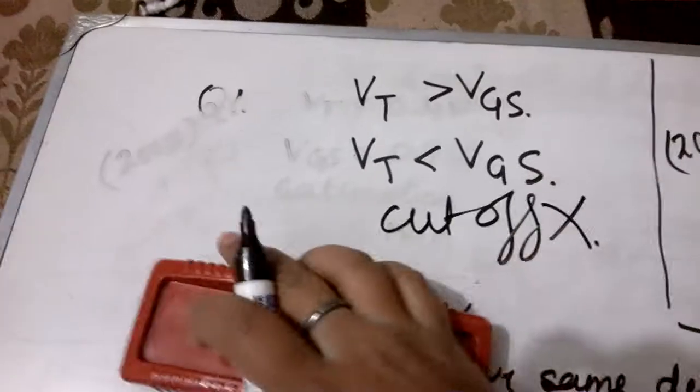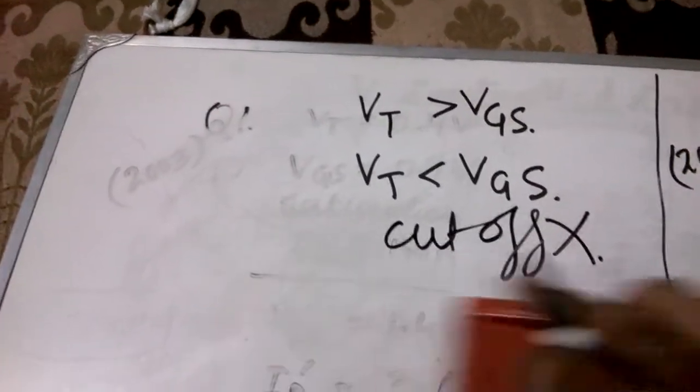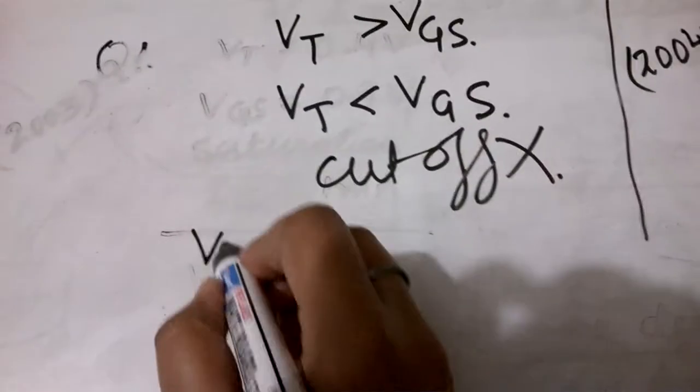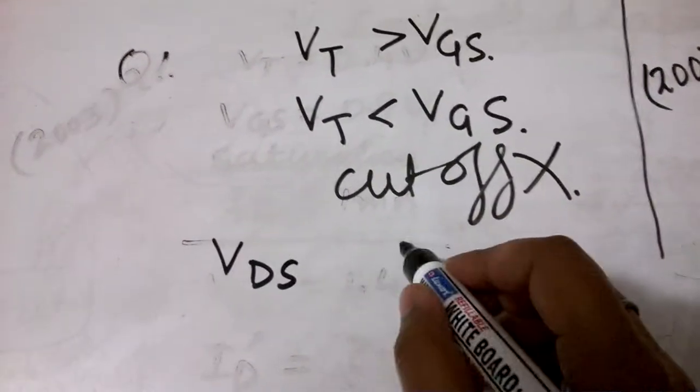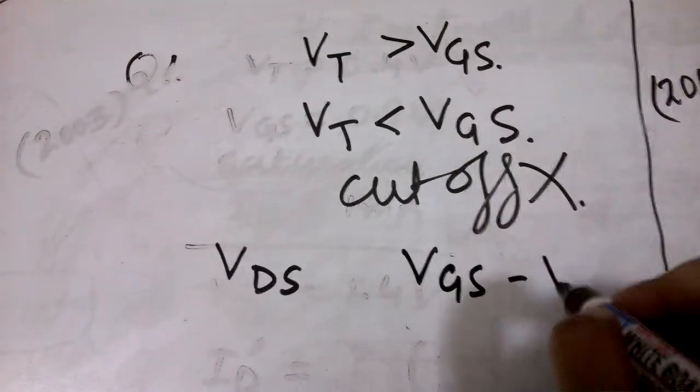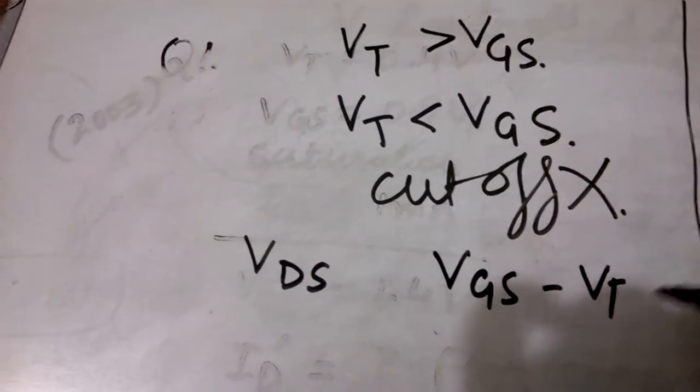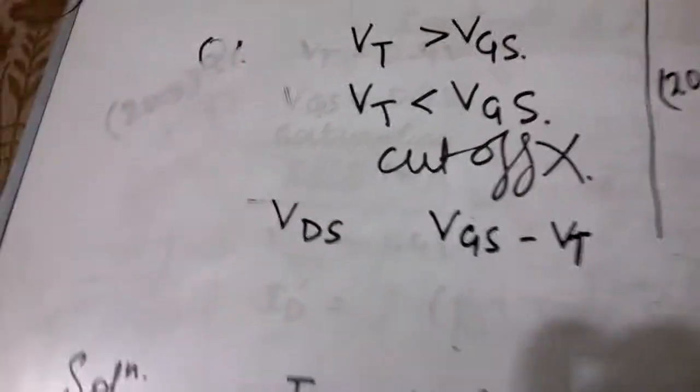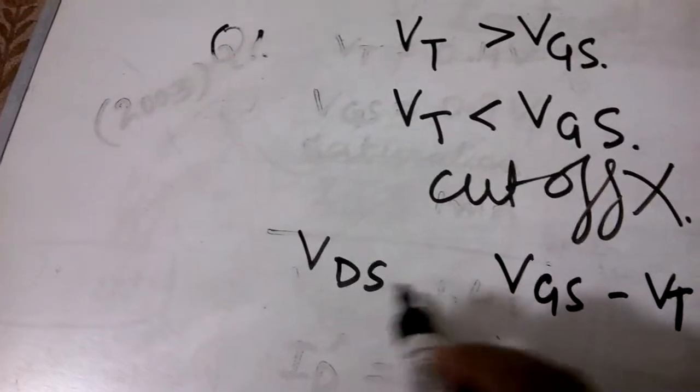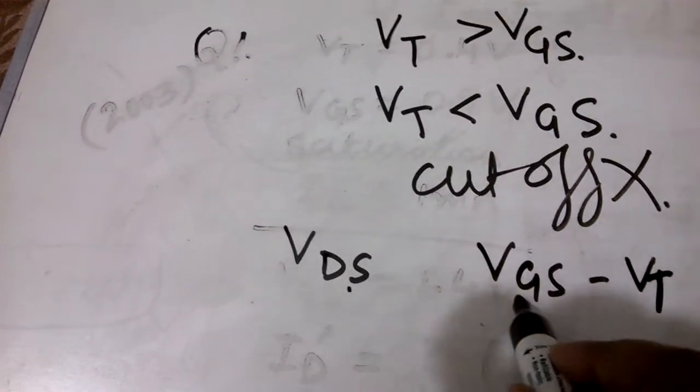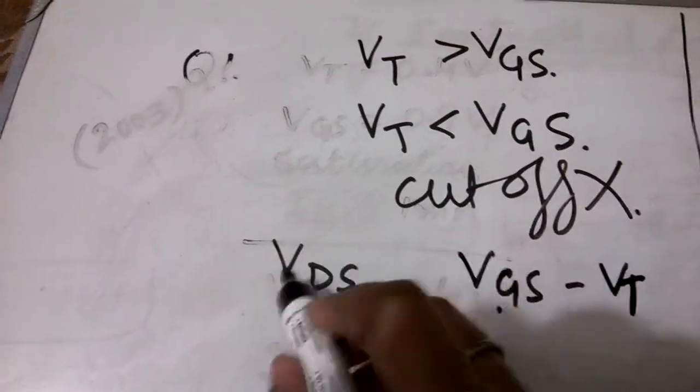Next we have to check for the linear or saturation region. For that we have to compare the value of VDS with the value of VGS minus VT. This will help us to know the value of the current.